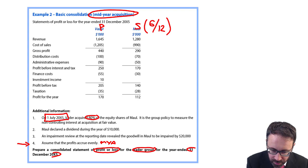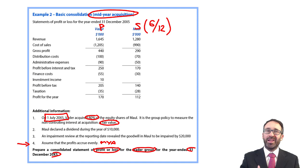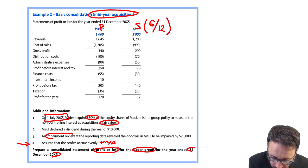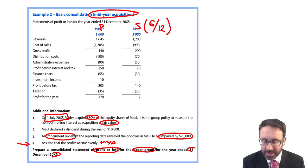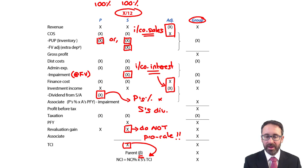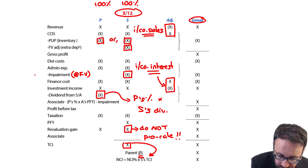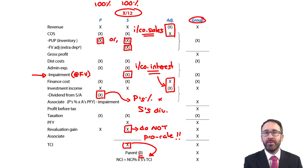Other bits and pieces is that we're told that the non-controlling interest is measured at fair value. So if we had to calculate goodwill within a question, you would be calculating the full goodwill using the fair value of the non-controlling interest. That's important here because if you look at part three, it says that there was an impairment review and it revealed that the impairment was $20,000. That's going to be important.